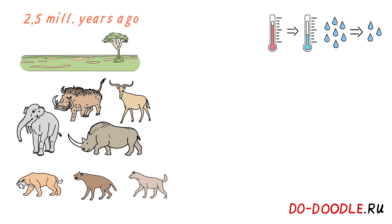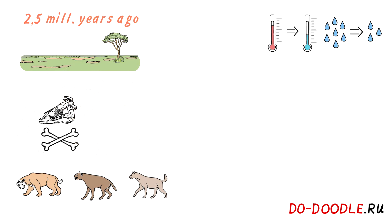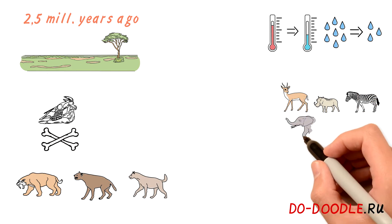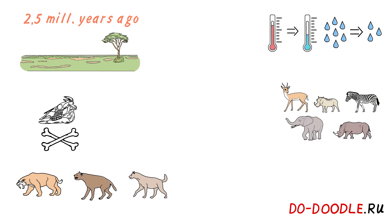Giant ungulates, or so-called hoofed animals, started to die out. Their place was taken by new species. These looked quite similar to modern antelopes, warthogs, zebras, elephants and rhinos.